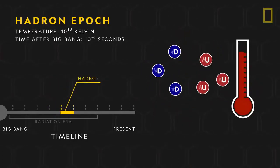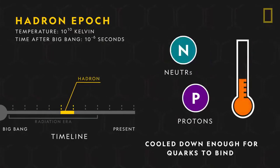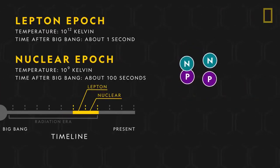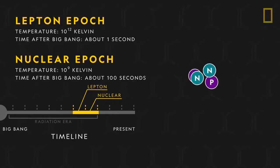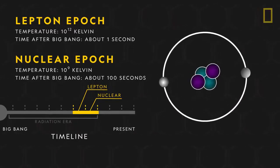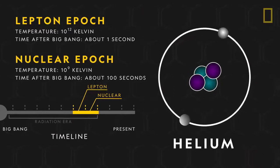Then in the hadron epoch, the universe cooled down enough for quarks to bind together and form protons and neutrons. In the lepton and nuclear epochs, the radiation era's last two stages, the protons and neutrons underwent a significant change. They fused and created nuclei, and in doing so, they created the first chemical element in the universe, helium.